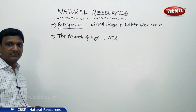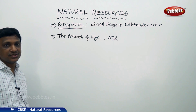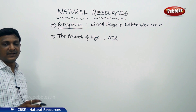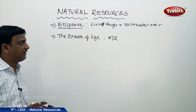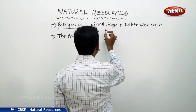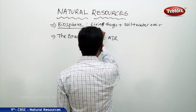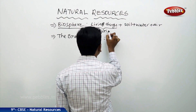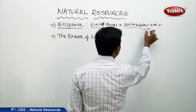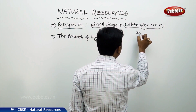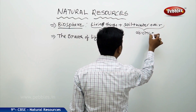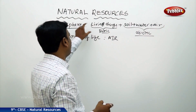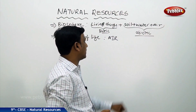Biosphere means not the living organisms in isolation, but living organisms along with the other things that help them continue life. You can divide it into two: the living things are biotic components of the biosphere, and the non-living things are called abiotic components of the biosphere. So the biosphere consists of two kinds of components: biotic and abiotic.